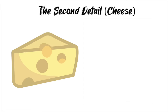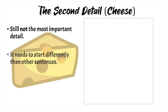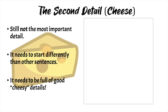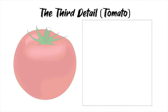The second detail is the cheese. Still not the most important detail. It needs to start differently than other sentences and be full of good cheesy details. For example: 'Another reason I love teaching is that the days go by quickly.' Here we used 'another reason.'